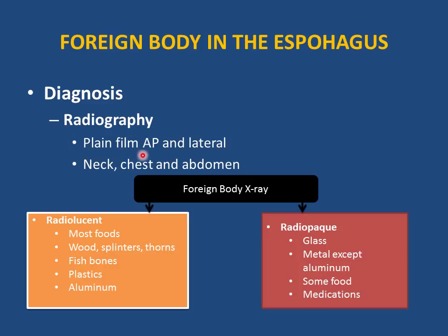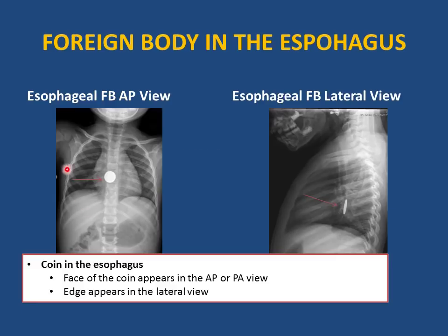X-rays should include AP and lateral views of the neck, chest, and abdomen. There are two types of foreign bodies: radiolucent (not visible on x-ray) — most foods, wood splinters, thorns, fish bones, plastics, and aluminum — and radio-opaque (visible on x-ray) — glass, most metals except aluminum, some foods, and medications.